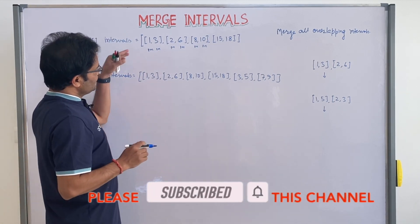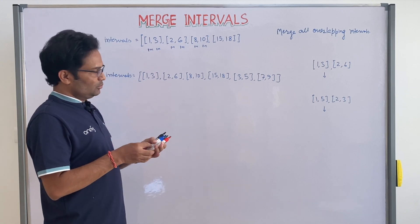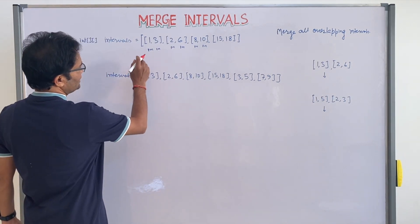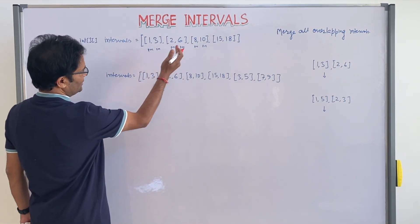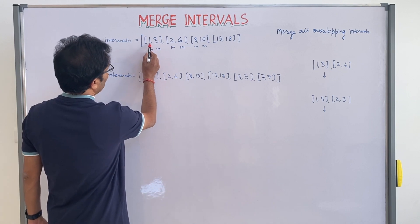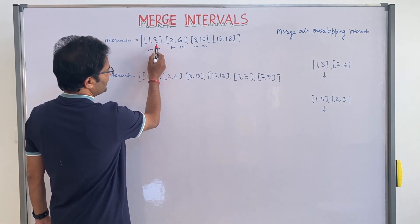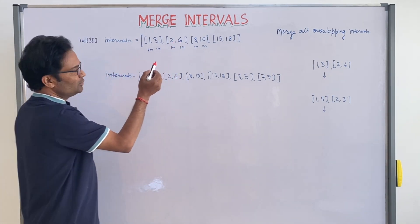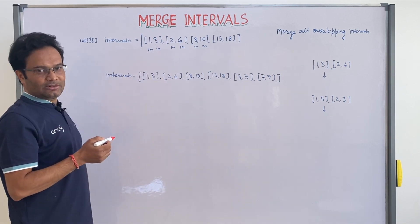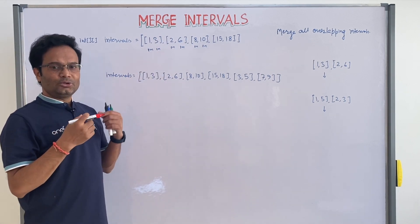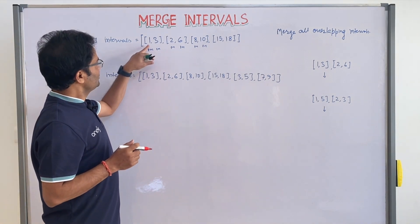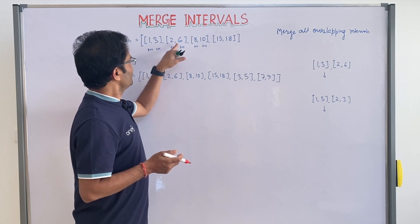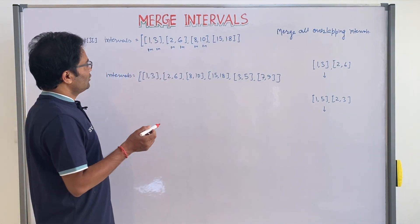What you have to do is merge all overlapping intervals. Suppose you see any meetings: one unit starts from 1pm to 3pm, and the next meeting starts from 2pm to 6pm. You can see these two meetings are overlapping. One meeting starts at 1 o'clock and ends at 3 o'clock, another starts at 2 o'clock and ends at 6 o'clock — both meetings are overlapping.